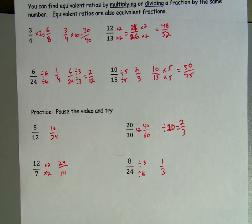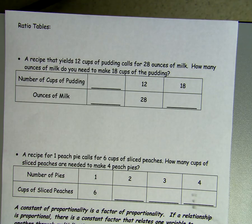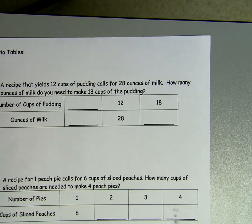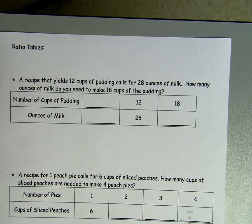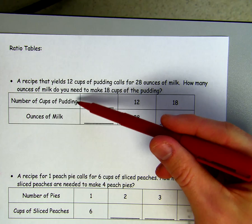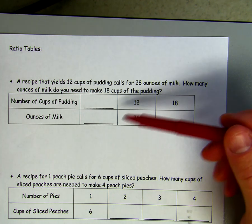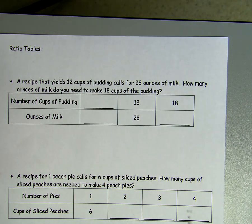The next part is actually using your ratios and finding ratio tables. A ratio table has a certain variable at the top and a certain variable at the bottom — they have a relationship. The object is to find that relationship, find the unit rate, and then you can find any proportion you want.